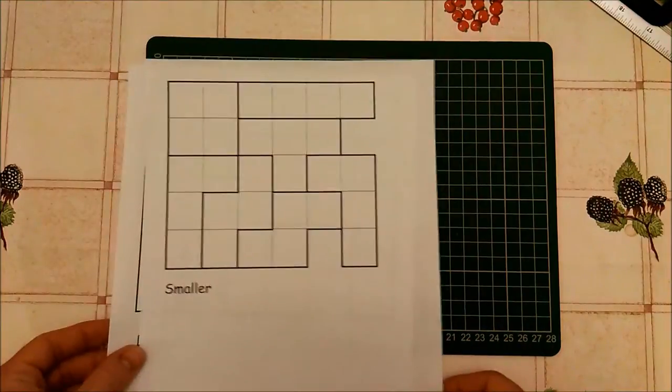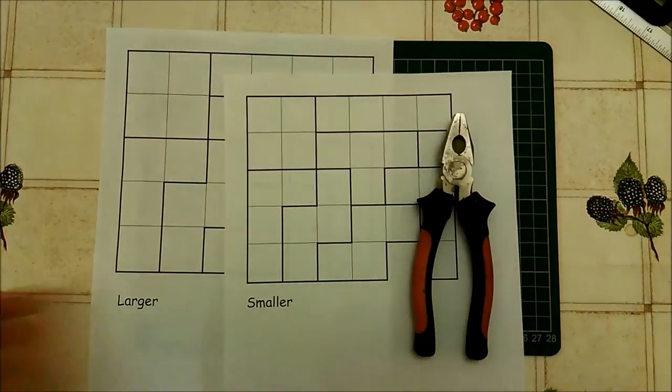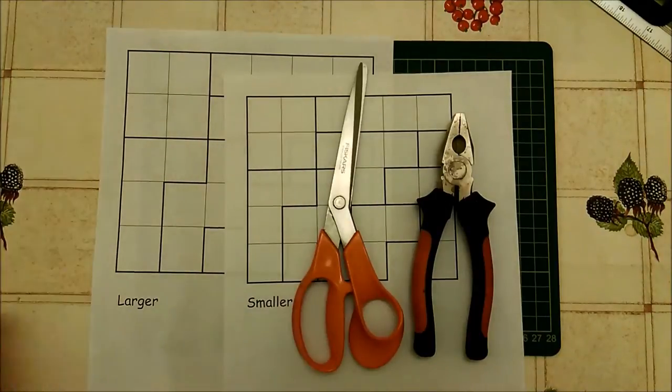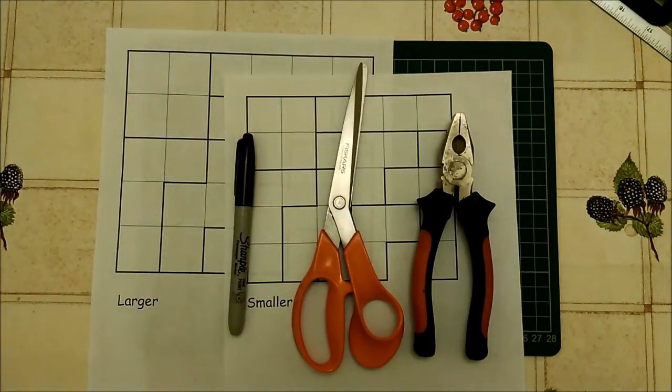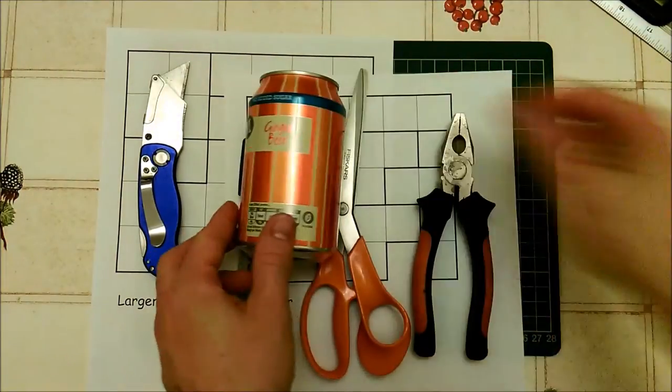First up download and print the Tetris cookie cutter templates from the description below. You'll also need a pair of pliers, a pair of scissors, a permanent marker, a craft knife with a sharp edge and several aluminum drinks cans.